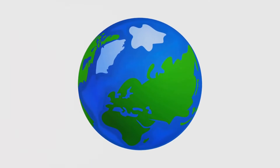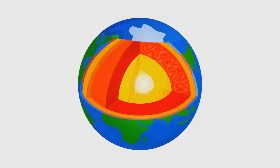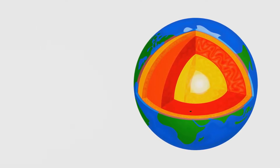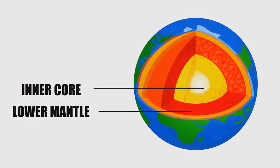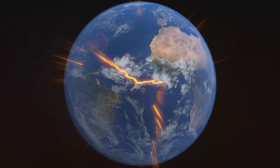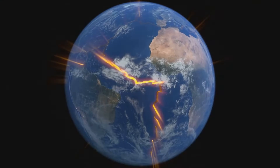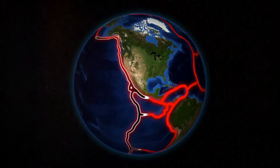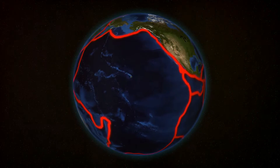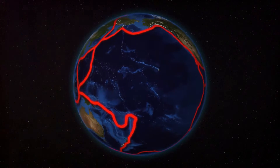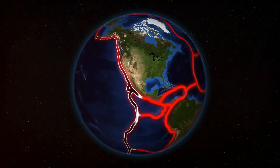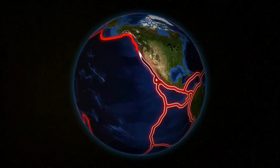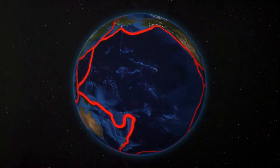Imagine the Earth as a large apple, and the skin of the apple represents the Earth's crust and uppermost mantle, together referred to as the lithosphere. Now, this skin is not a single, unbroken layer — it is divided into several large and small pieces, much like a jigsaw puzzle. These pieces are what we call tectonic plates.